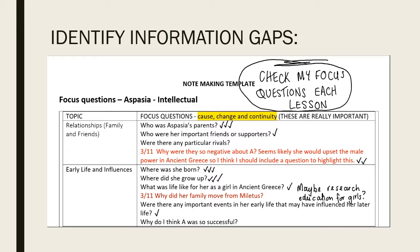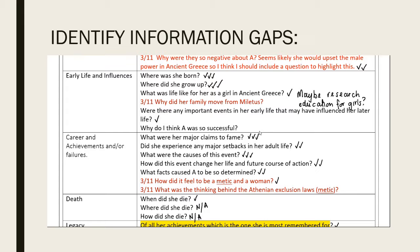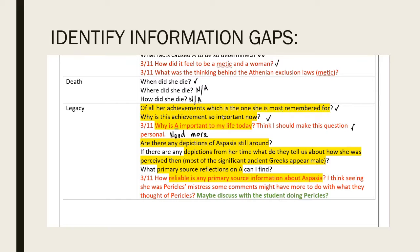Once you've gone through a couple of sources of information — make sure you've got a variety, like a book if it's available, a website, an encyclopedia article — then I tend to go back and revisit my focus questions for a final time and check for information gaps. I tick ones I think I can answer, with more ticks meaning I'm really certain, and I've highlighted areas that are important but I still don't have information for — those will drive my next search.